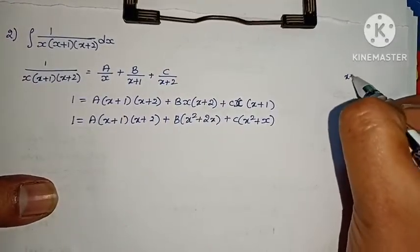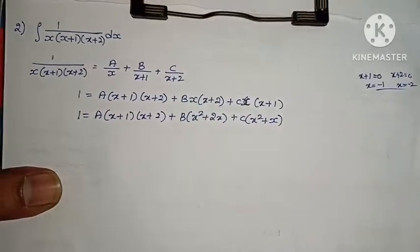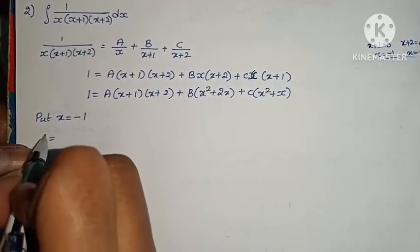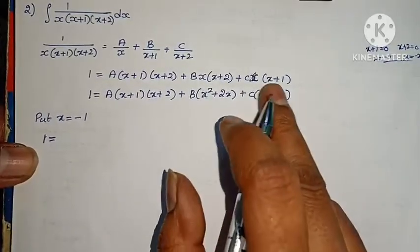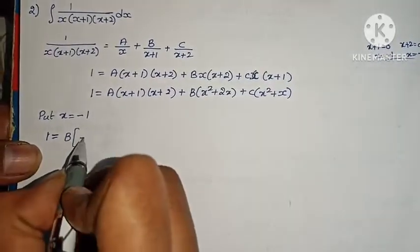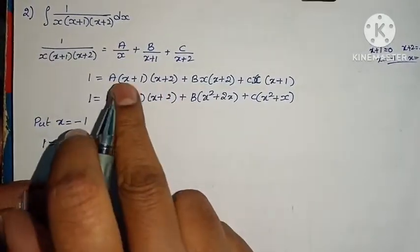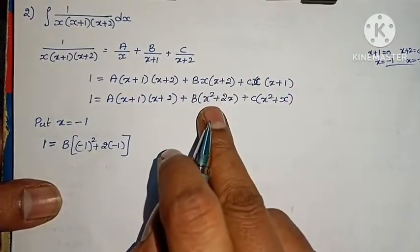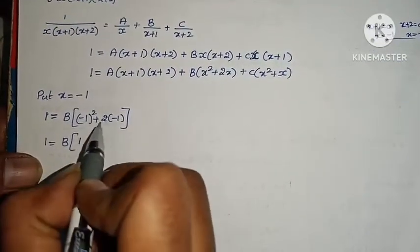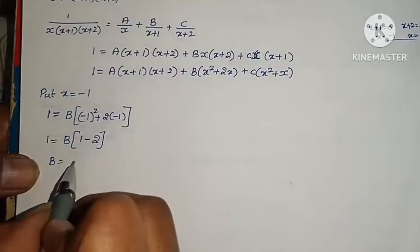Set x plus 1 equals 0 so x equals minus 1; set x plus 2 equals 0 so x equals minus 2. Substitute x equals minus 1: terms with A and C become 0. We get 1 equals B into (minus 1 squared)(minus 1 plus 2). That gives 1 equals B into 1 into 1, so B equals 1. Wait — checking: b equals minus 1.